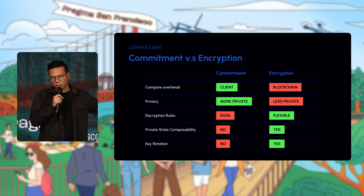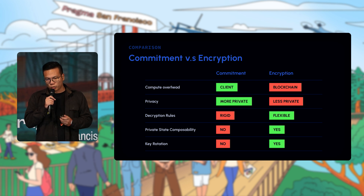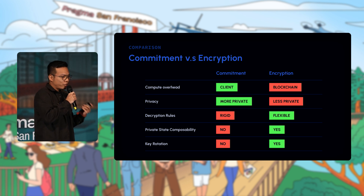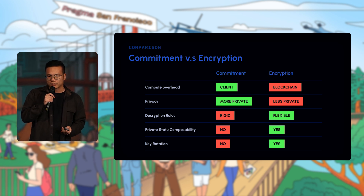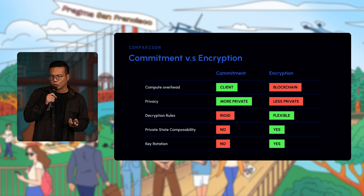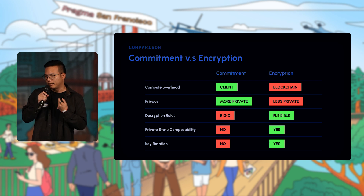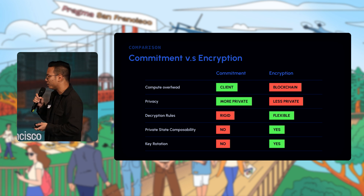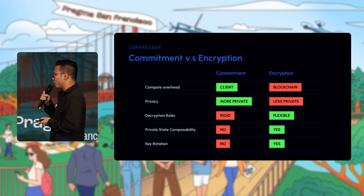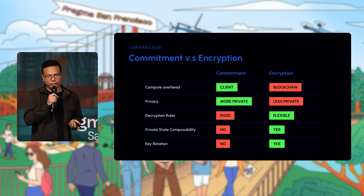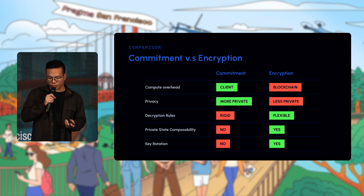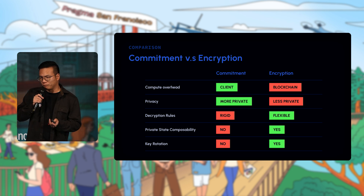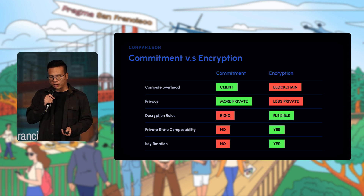In terms of privacy, commitment-based solutions are arguably more private because each user has their own encryption key and their secret never leaves the client — every time they generate a ZK proof, they attach it to a viewing key for the recipient. With encryption-based systems, you share some kind of decryption key — either a single private key or MPC-based — so you delegate decryption to a third party, which introduces some collusion risk.